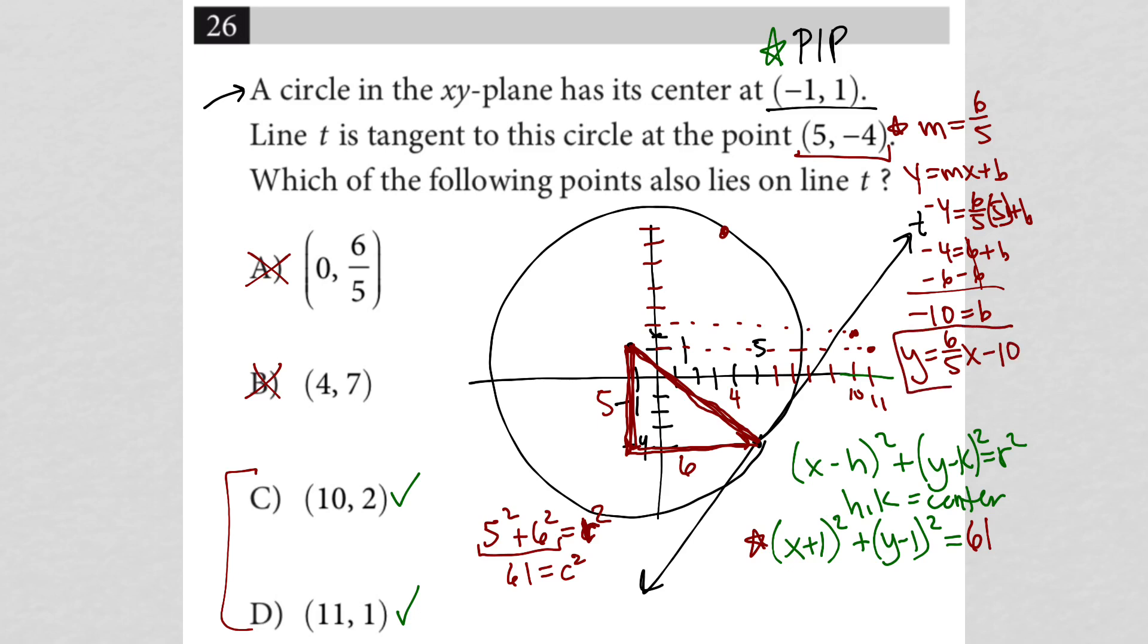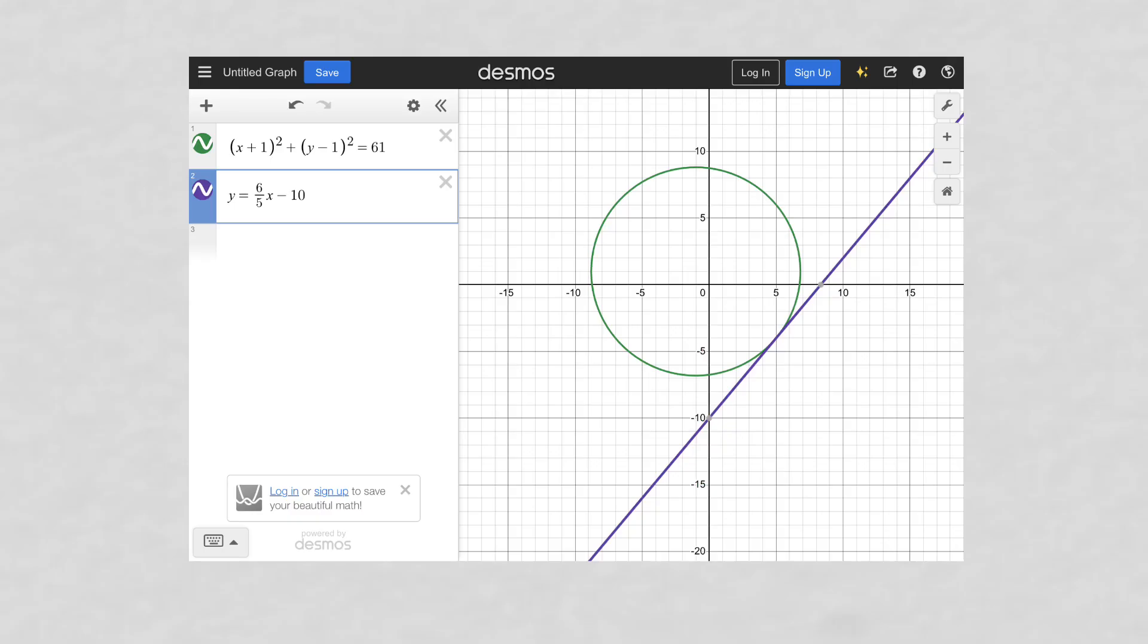So now I have two things. I have the equation of my tangent line and I have the equation of the circle. So now I'm going to show you what that looks like in Desmos. There it is. So here's the equation of my circle, here's the equation of the line. And you can see both of those very clearly. And you can also clearly see that this point right here is the point 10 and 2, right? So that's a 2 right there. So that confirms it for sure.